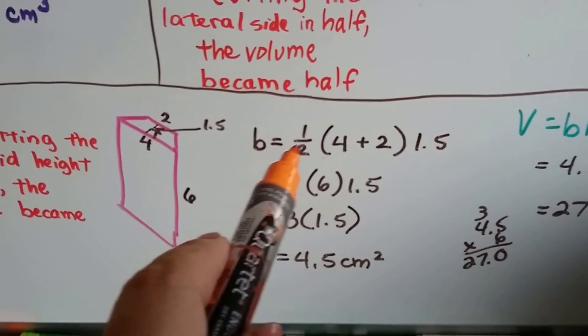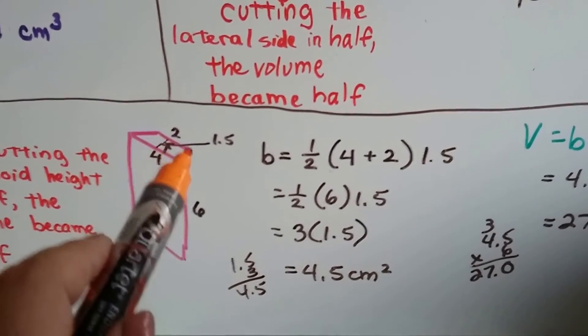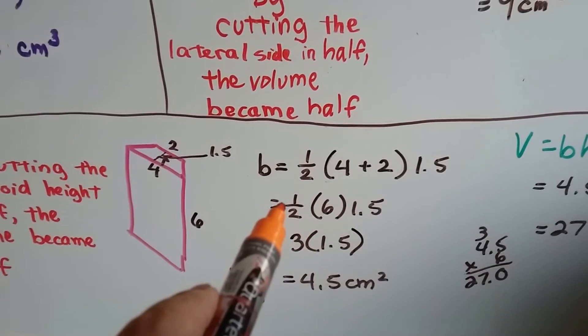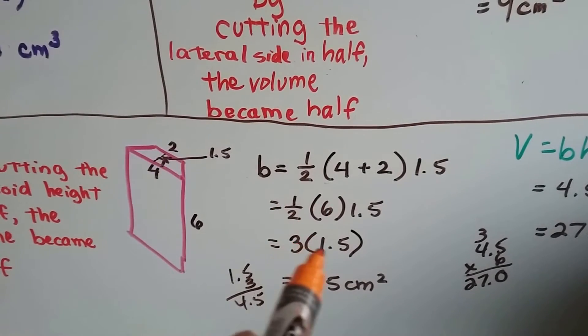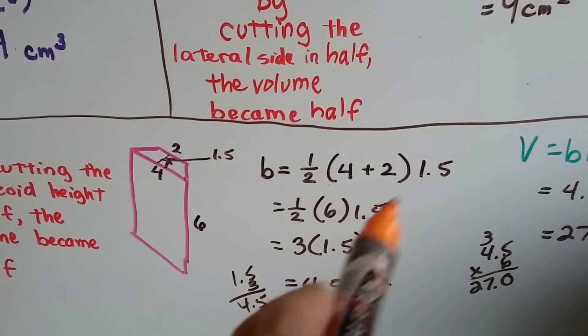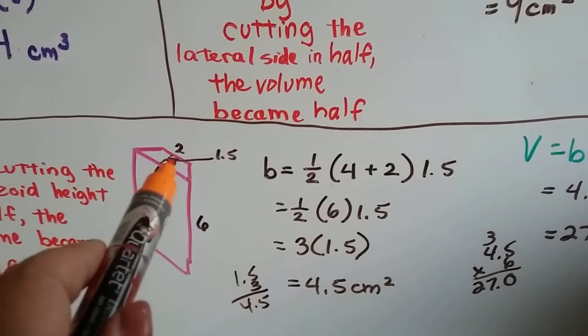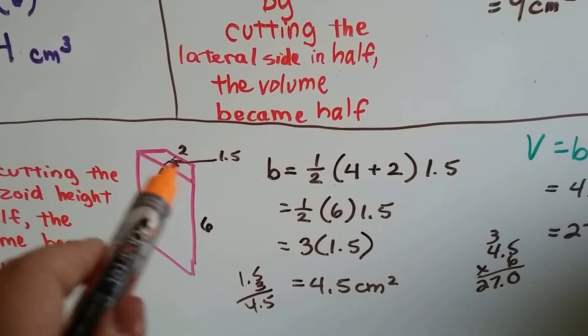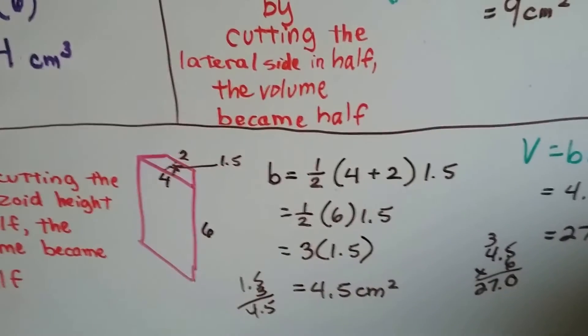Well, we get the same thing for the base, 4, and base, 2. We add those together and get 6, and we need to multiply that by a half, so that's 3. And now instead of multiplying it by 3, which was the old height of the trapezoid, it's 1 and a half now. And we get 4.5 centimeters squared for this trapezoid, for the base.